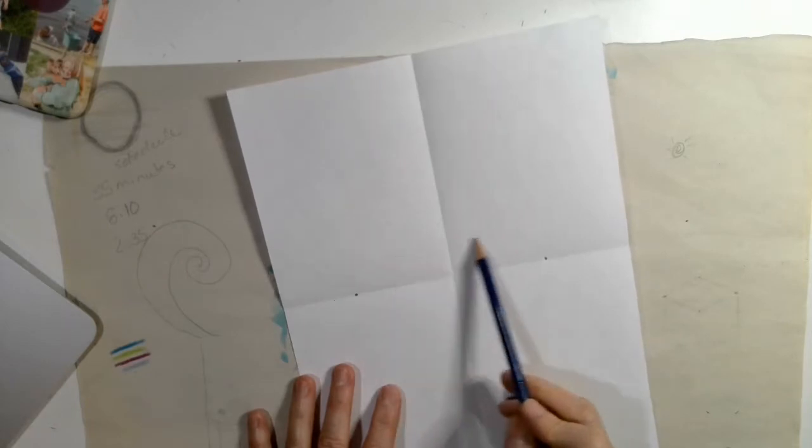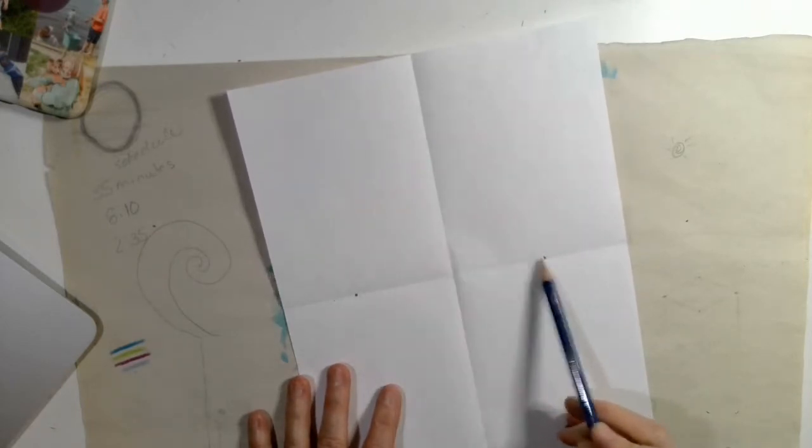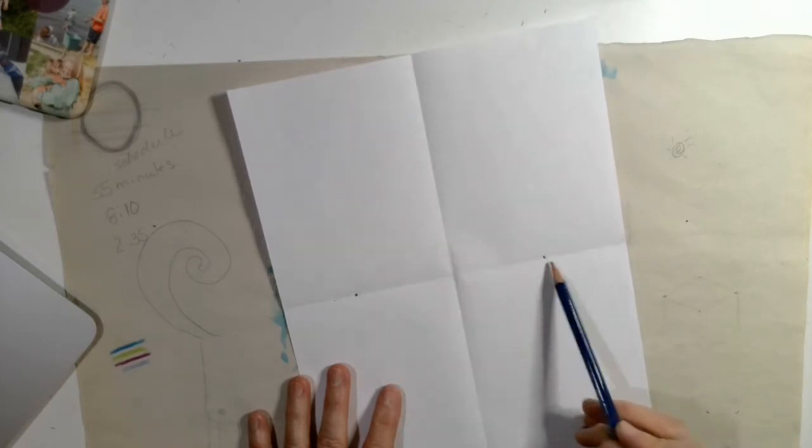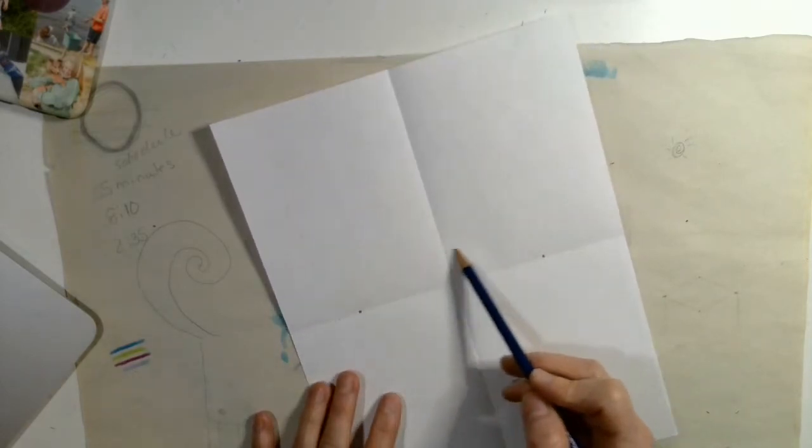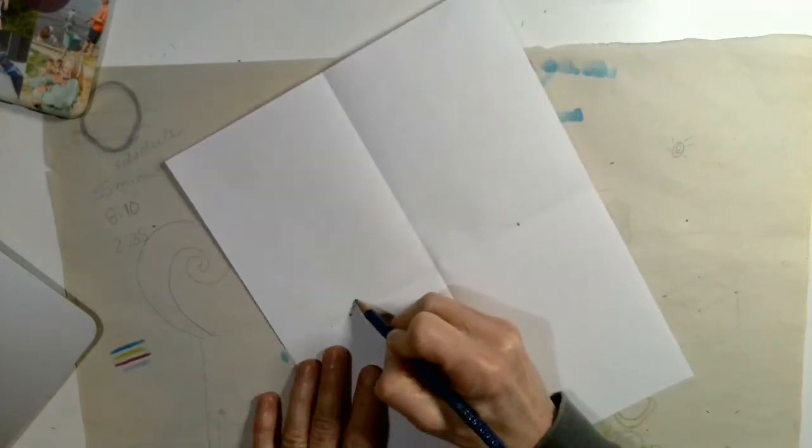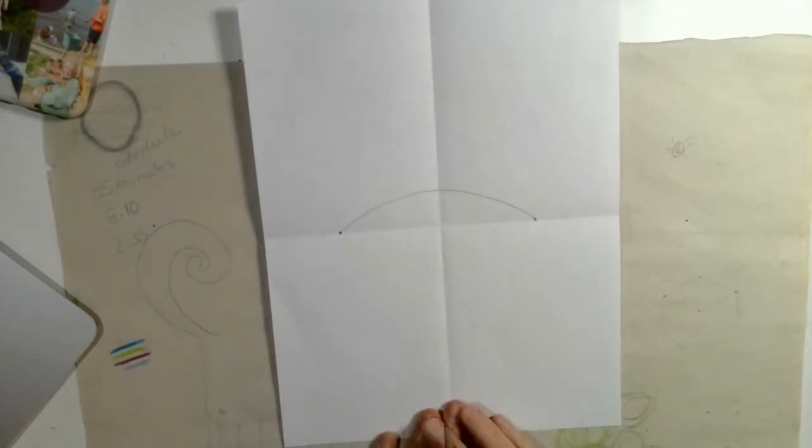Now we're going to connect these dots with a rainbow line. Remember I've talked to you about practicing it before you draw it, so you can kind of get a feel for how you want your line to look and where you want it to go. So don't be afraid to do that. And there's our rainbow line. Can you guess what it is yet? No.